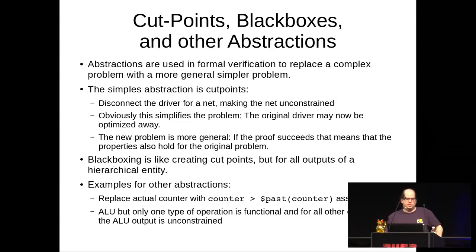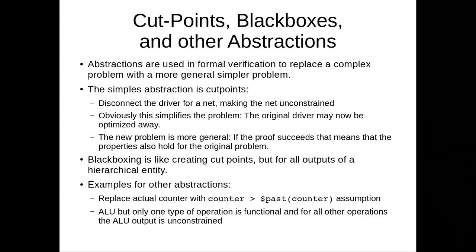I have a few minutes to talk about cut points, black boxes, and other abstractions. The idea behind an abstraction in formal methods is that you switch out part of your design with a different, less-constrained circuit that includes the behavior of the original but may do other things as well. The textbook example: you have a counter that increments by one, and you create an abstraction that can skip numbers but always increments strictly. If you prove a property with this abstraction, you've proven an even stronger property that includes the original design's behavior.